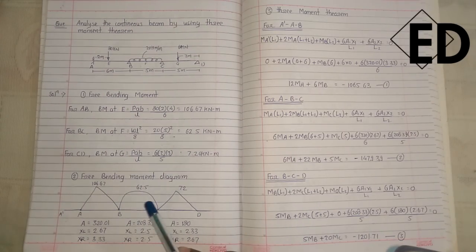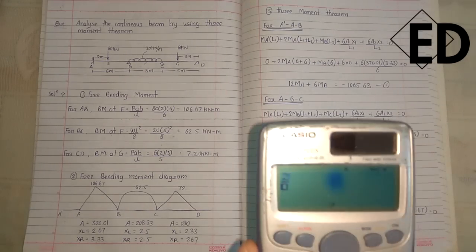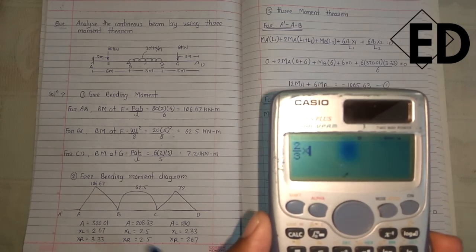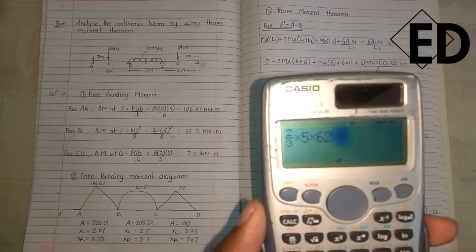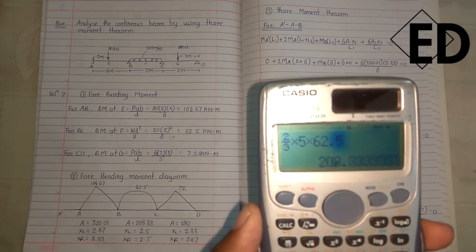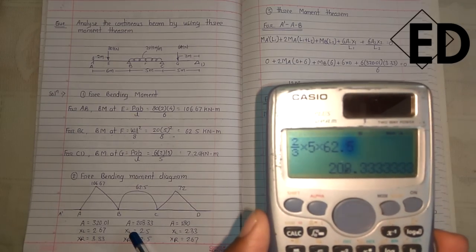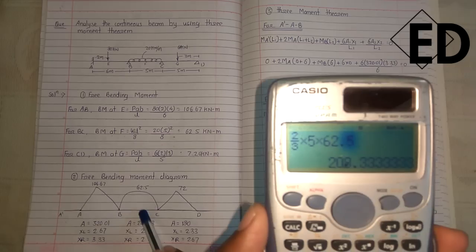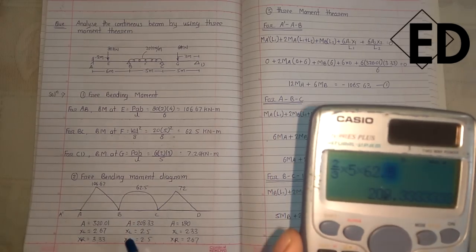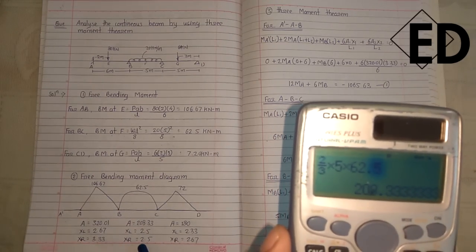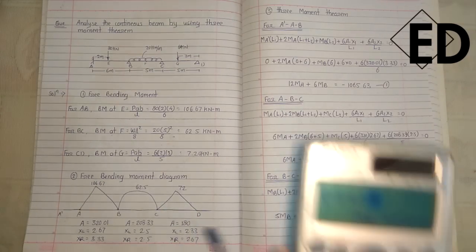For the parabola, which is the free bending moment diagram for UDL, the area of the parabola is 2/3 × base (BC) × height (62.5). By calculating, we get area = 208.33. Since the parabola is symmetric about its axis, xl = xr = 2.5.